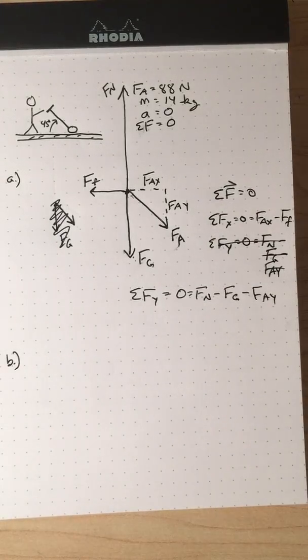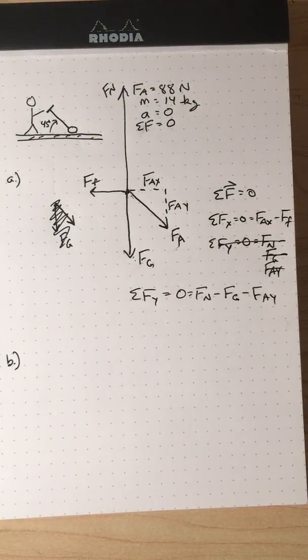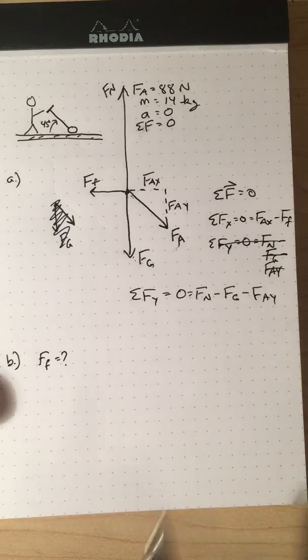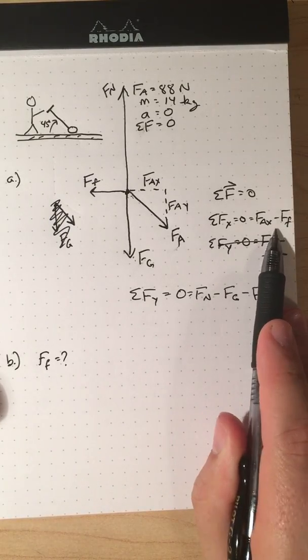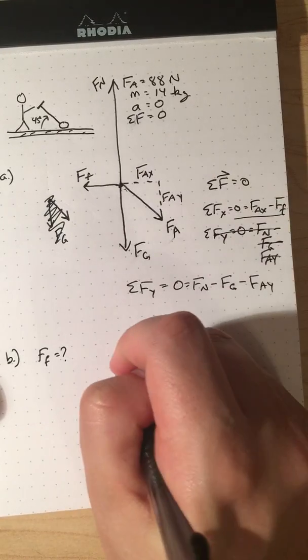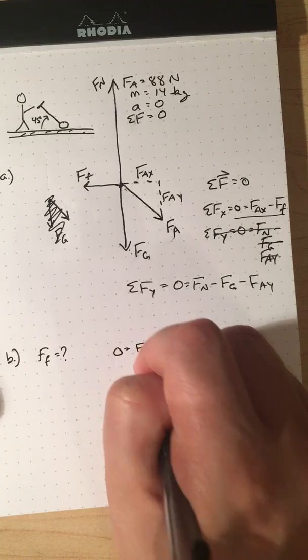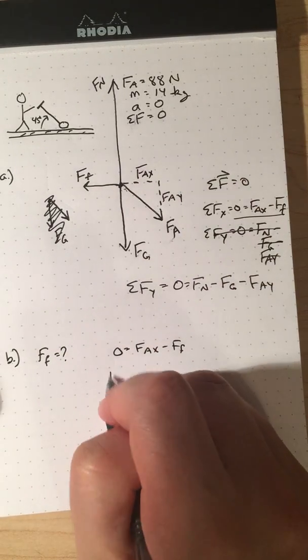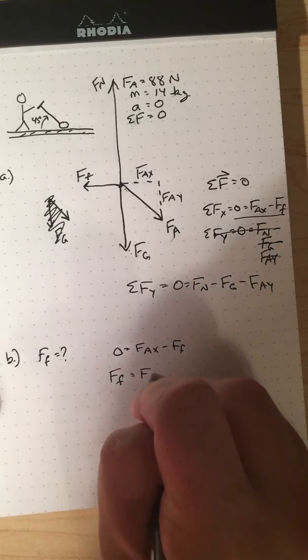What does part B say? Part B says calculate the horizontal friction force on the motor. Well, I think we're going to have to start with this equation, right? We know that zero equals F_A_X minus F_F, which if I add F_F to both sides, I see that F_F is the same as F_A_X.